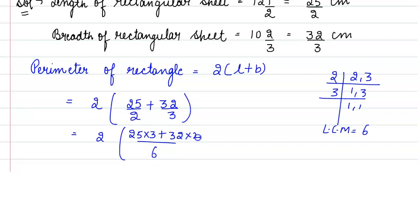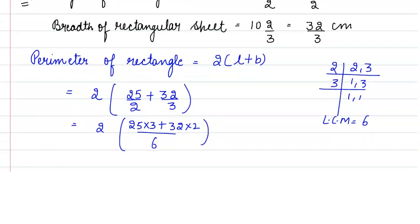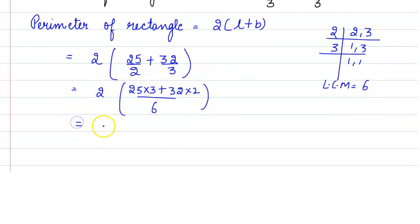Now, 25 × 3 = 75 and 32 × 2 = 64. So we have (75 + 64)/6. This gives us 2 × (139/6), which equals 139 upon 6.